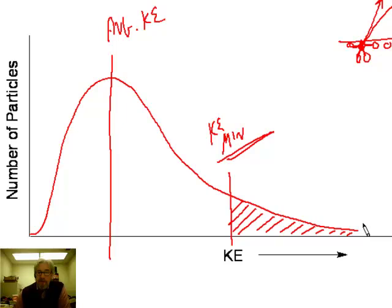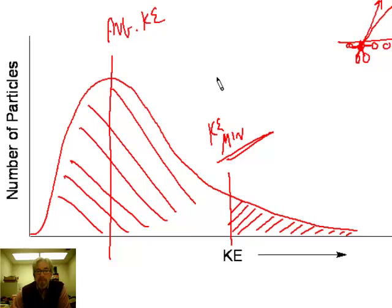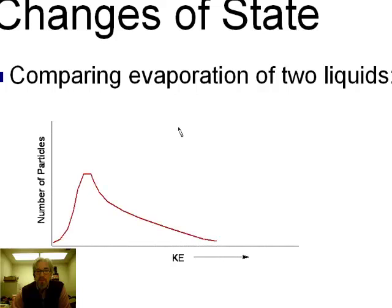Evaporation causes the average temperature of the liquid to drop, because the particles that leave are those with the highest kinetic energy. When they're gone, the remaining particles have a lower average KE — so temperature drops. Don't believe it? Lick the back of your hand and blow on it — it feels cool because your hand must supply energy to compensate for the kinetic energy lost when the particles evaporated.